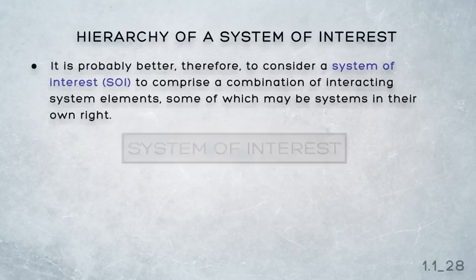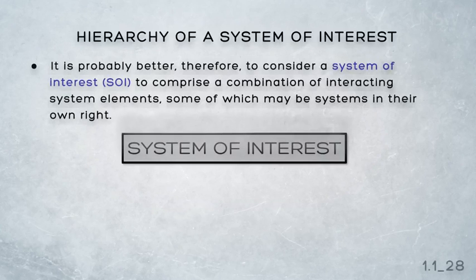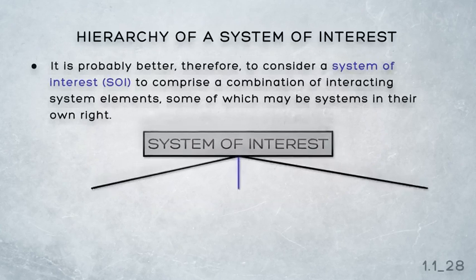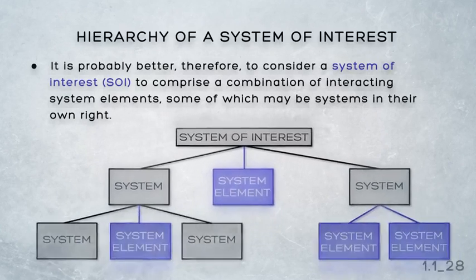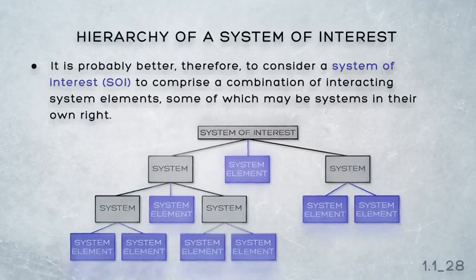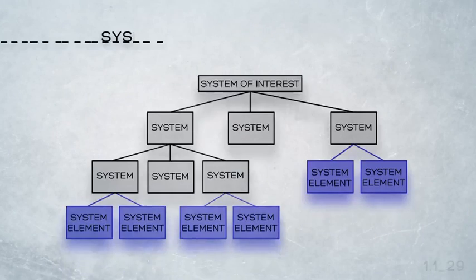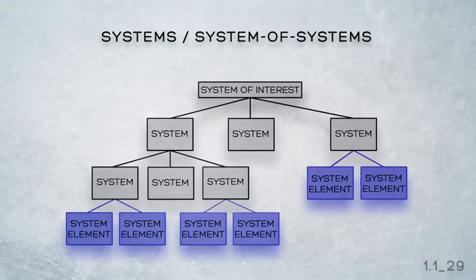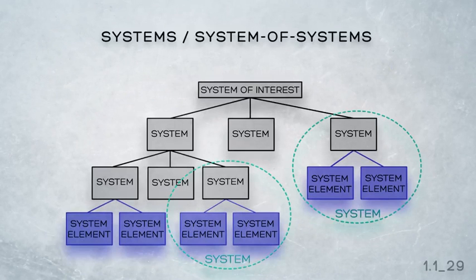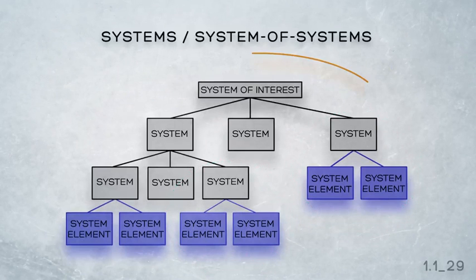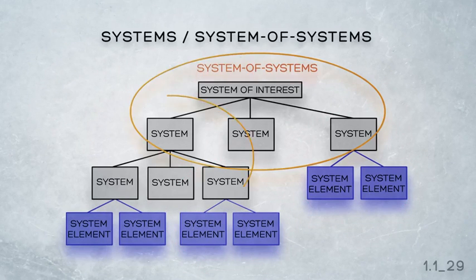It's probably better, therefore, to consider a system of interest to comprise a combination of interacting system elements, some of which may be systems in their own right. When the system of interest consists of only system elements that are systems in their own right, the system of interest is called a system of systems.